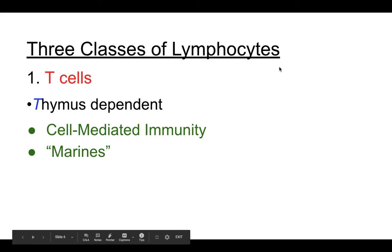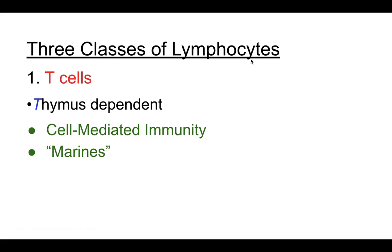There are three main classes of white blood cells: T cells, B cells, and NK cells. T cells are named because they are made in your thymus, and they regulate cell-mediated immunity. I think about T cells like the Marines — first ones into any conflict, they like hand-to-hand combat, they go in, kill as many bad guys as they can, and then get out. T cells engage in hand-to-hand combat, producing all kinds of different toxins that kill off pathogens.